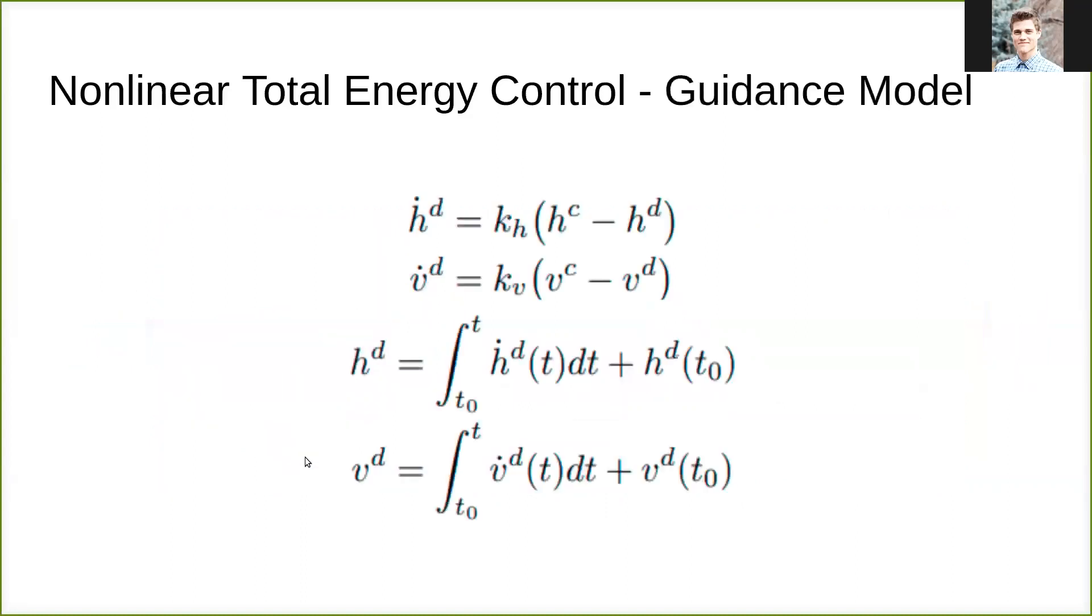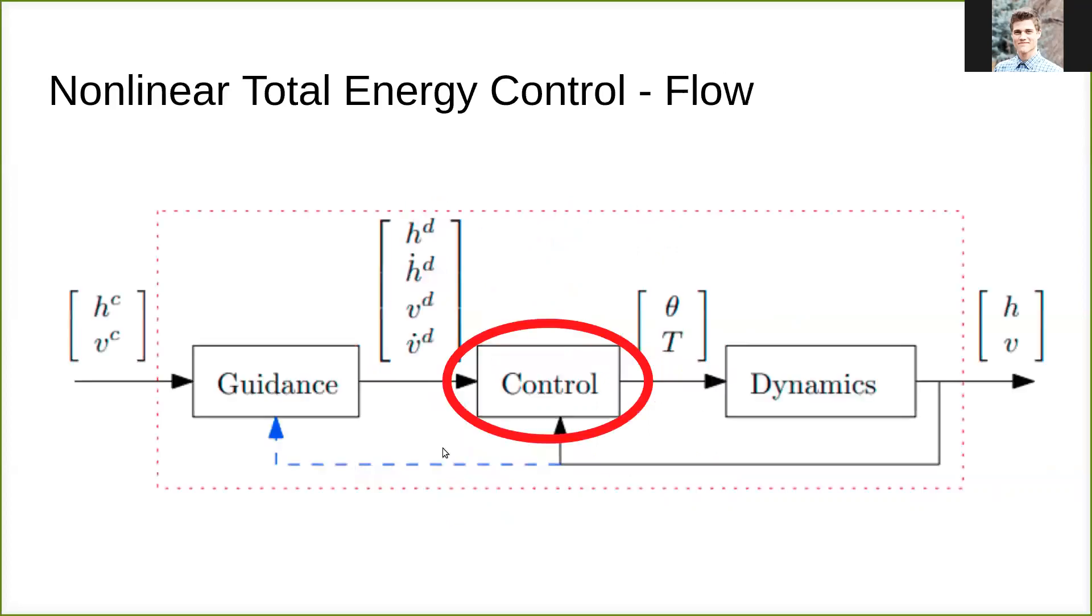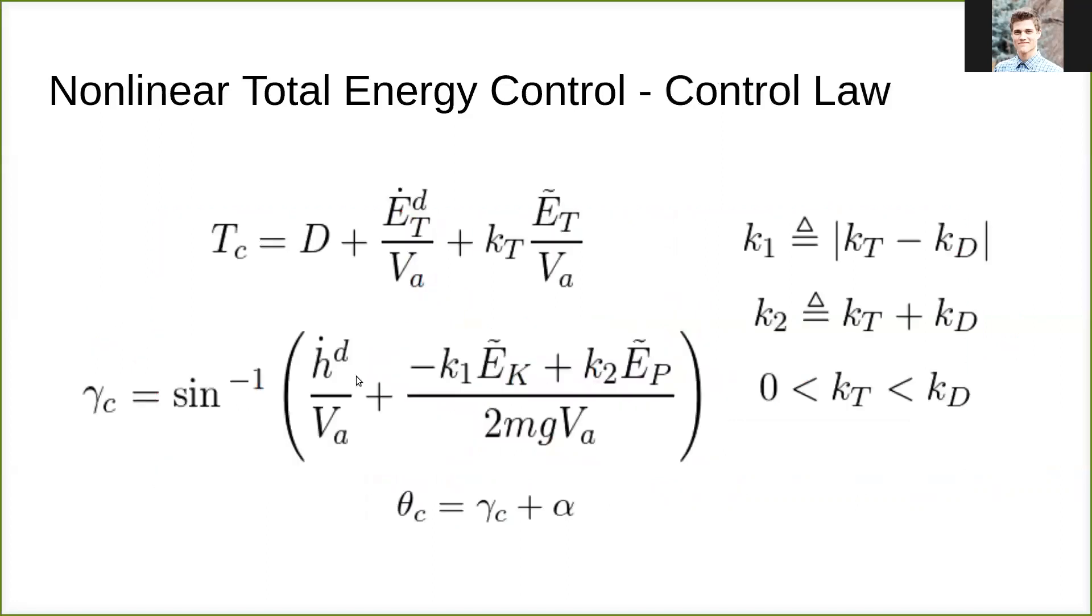So working on our guidance model as described previously, we simply describe it to be the derivative of our desired states are equal to the proportional version of the difference between our commanded state and our current desired state, where our current desired state at each time step is just the integration of the rate term of that state in the desired form, plus the starting desired form, which is just equal to our initial state. Using that transition guidance model, we're able to feed those guidance terms into our control, which then follows these control laws to get our stability.